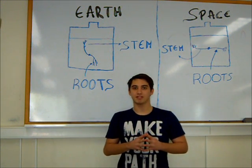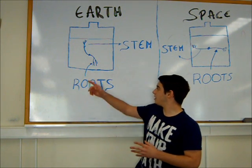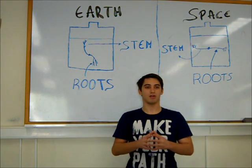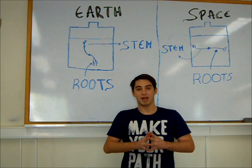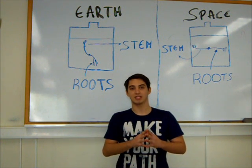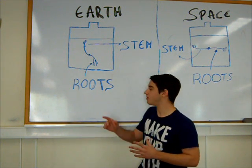Roots display positive gravitropism since they grow in the direction of gravitational pull, while stems display negative gravitropism since they grow in the opposite direction of gravitational pull.